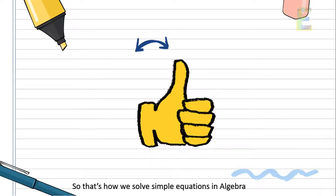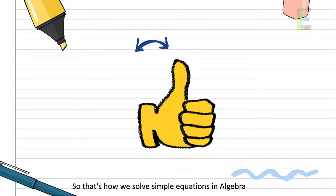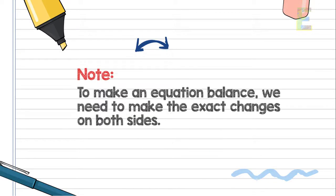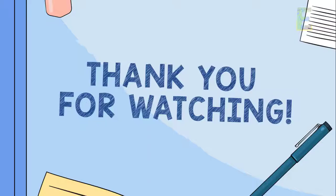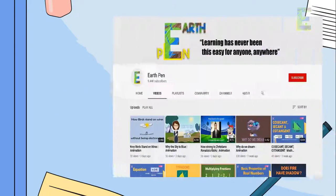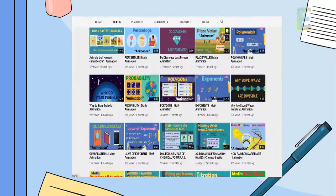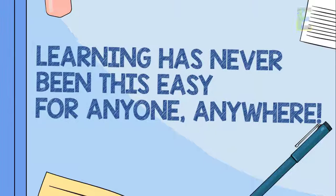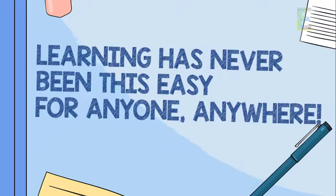So that's how we solve simple equations in algebra. It is very easy, right? Again, in order to keep an equation balanced, we need to make the exact changes on both sides. I hope you learned a lot in solving basic equations in algebra. You can also watch other video tutorials here in our channel. Once again, this is EarthPen — learning has never been this easy for anyone, anywhere. Have a nice day.